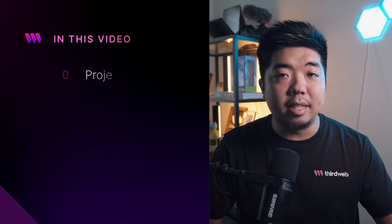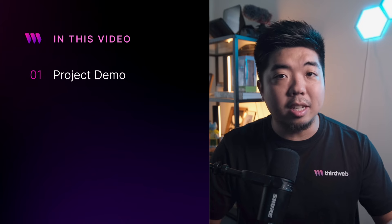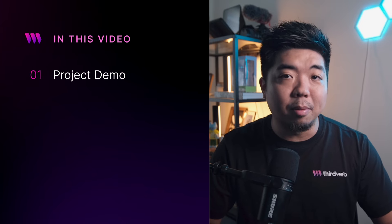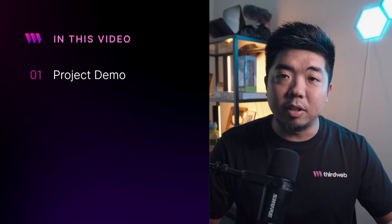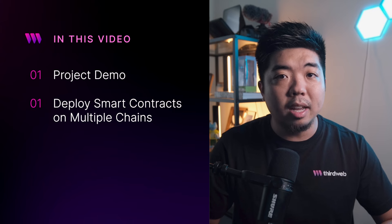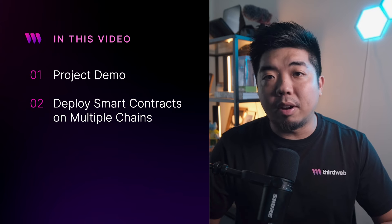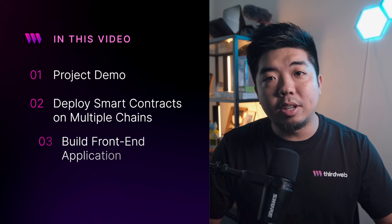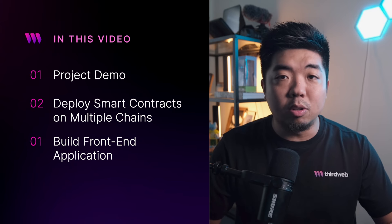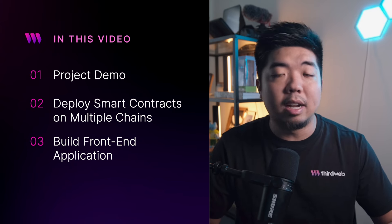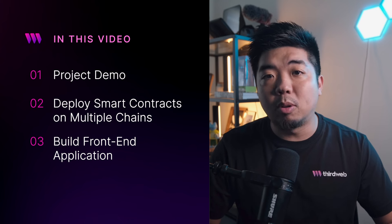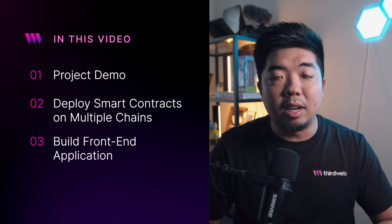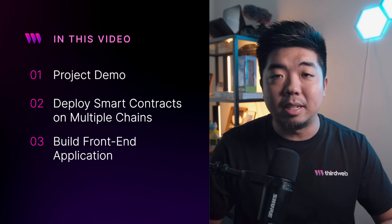Here's an overview of what we're going to cover in this video: we'll first look at a demo of the experiment we're building out, then we'll deploy smart contracts on multiple chains, and then we'll build out our front-end application where a user can use account abstraction with thirdweb smart wallets across multiple chains and interact with those contracts seamlessly.